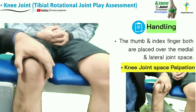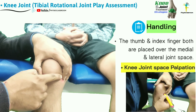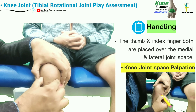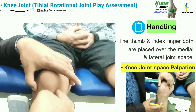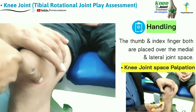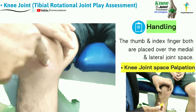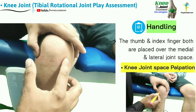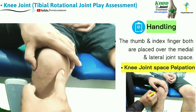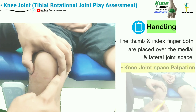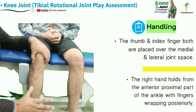It is easy to identify the knee joint space: palpate the apex of the patella, then move medially and laterally to feel the gap between the tibia and the femur. Below, you can feel the tibial condyle, and above, the femoral condyle.